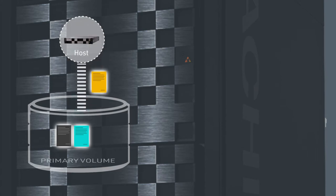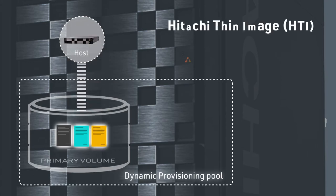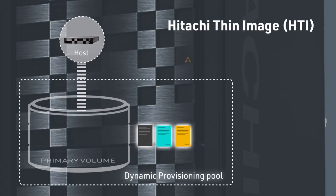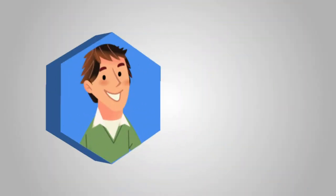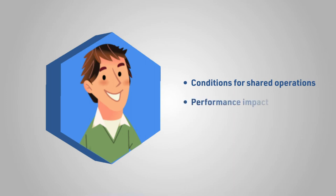In this video, I'll talk about these aspects of a volume that is shared by Universal Replicator and Thin Image: the conditions for Universal Replicator and Thin Image operations on pairs with shared volumes, the performance impact of host I/O on pairs with shared volumes, and the Universal Replicator and Thin Image license capacity usage for pairs with shared volumes.